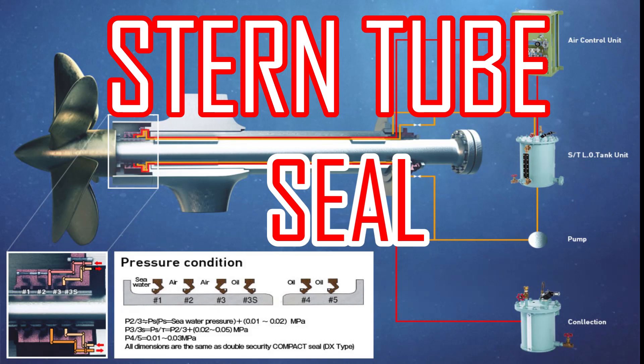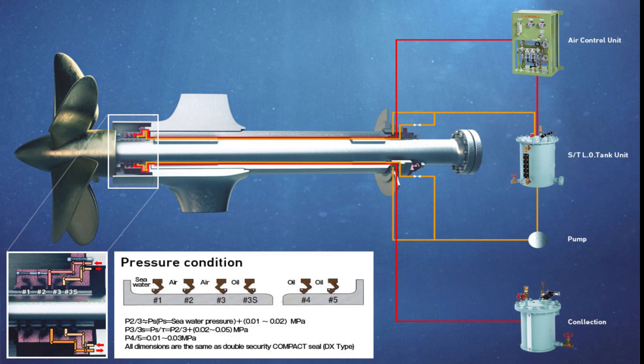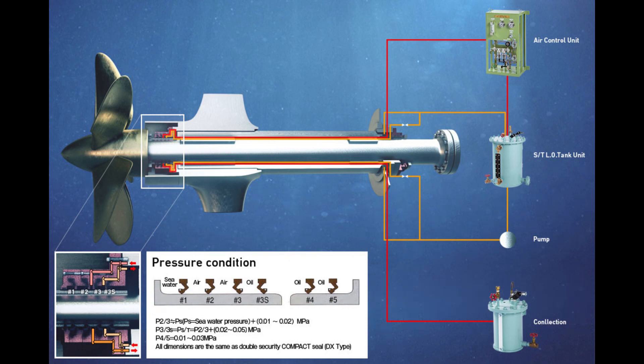Hi guys, now we're talking about stern tube seals and propeller shaft seals. A stern tube seal is a housing with a series of seal rings clamped into position on the bush. Stern tube seals have to perform two separate functions: one is to ensure that water does not enter the engine room, and the second is to allow the propeller shaft to rotate as smoothly and freely as possible.